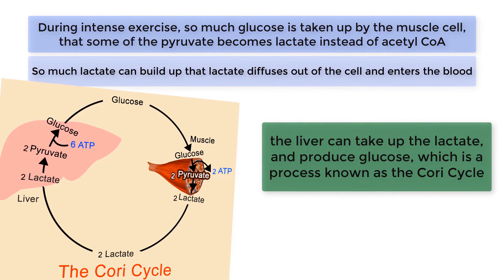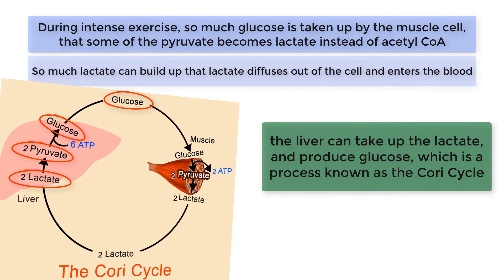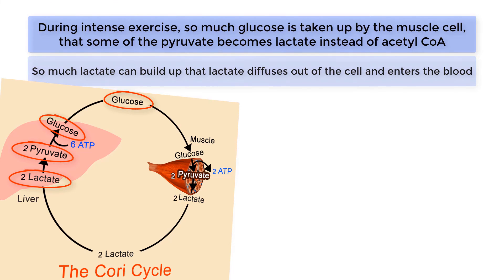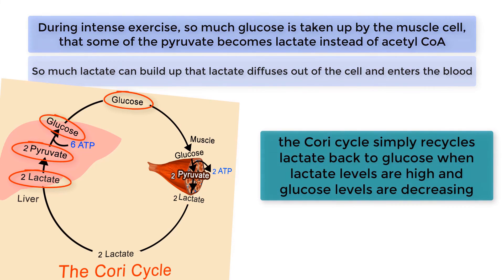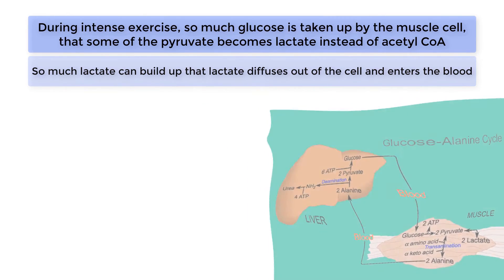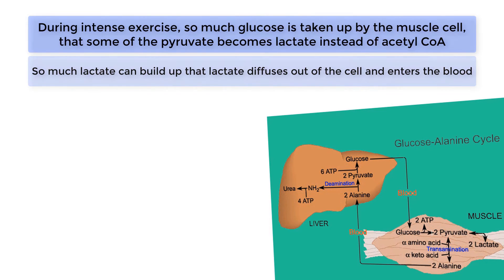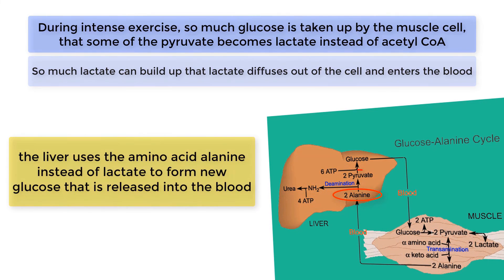This is accomplished by simply reversing the process that produced the lactate. Two molecules of lactate are converted to pyruvate, and the two molecules of pyruvate are then combined to form one molecule of glucose. The glucose is then released from the liver into the blood, giving the contracting muscle another chance to use the glucose as fuel. Thus, the Cori cycle simply recycles lactate back to glucose when lactate levels are high and glucose levels are decreasing. The glucose alanine cycle is a similar process, except the liver uses the amino acid alanine instead of lactate to form new glucose that is released into the blood.